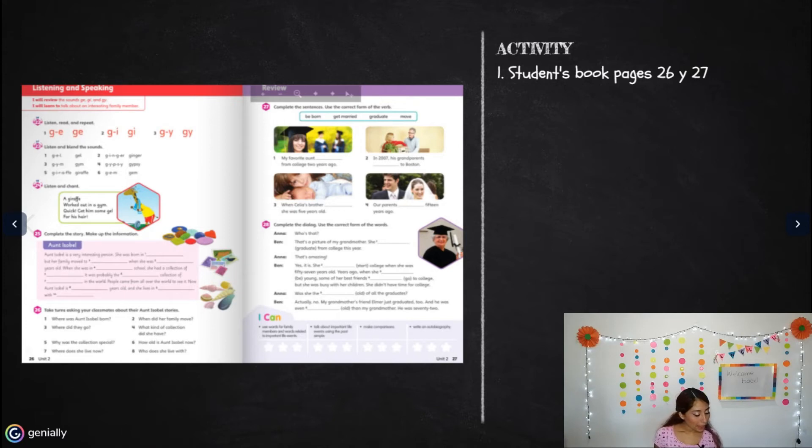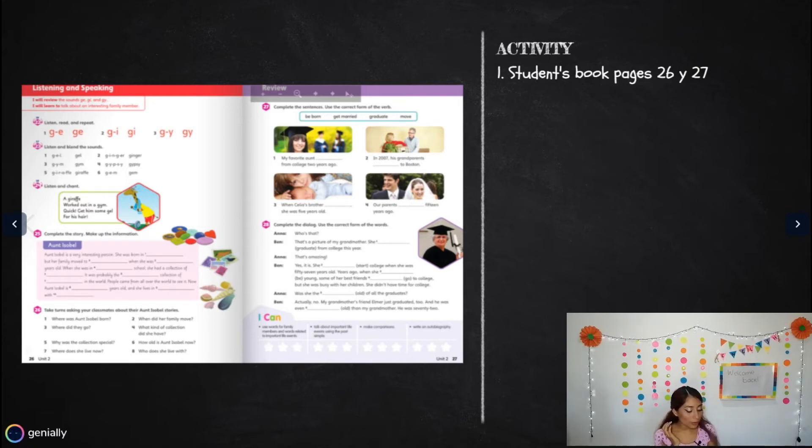It was probably the best collection and the most beautiful collection of the entire world or the whole world. People came from all over the world to see it. Now Ann Elie Isabel is 70 years old, is 100 years old, is 80 years old, and she lives in Mexico, she lives in Yucatan, she lives in Progreso, she lives in, what other country? In Hungary, in Australia.